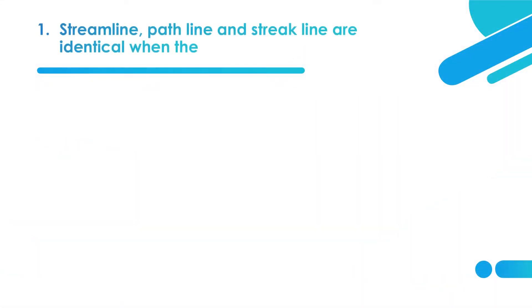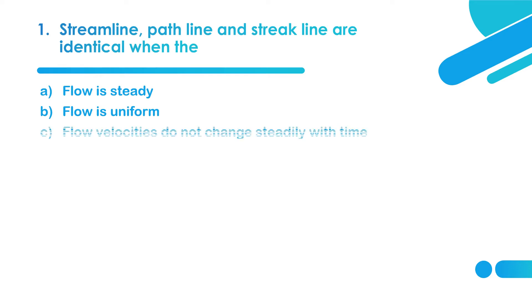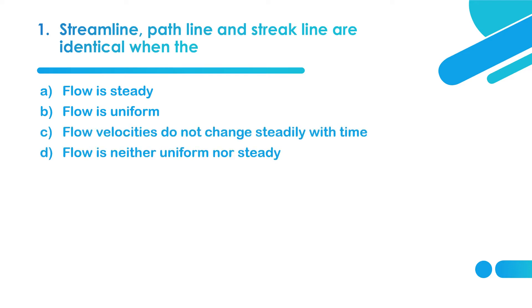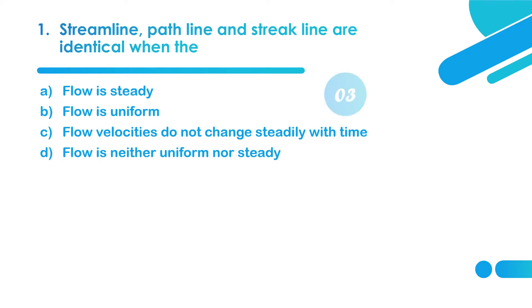The first question: streamline, path line, and streak line are identical when the flow is steady, flow is uniform, flow velocities do not change steadily with time, or flow is neither uniform nor steady. So streamline, path line, and streak line are all identical when the flow is steady — that is nothing but unsteady does not apply.